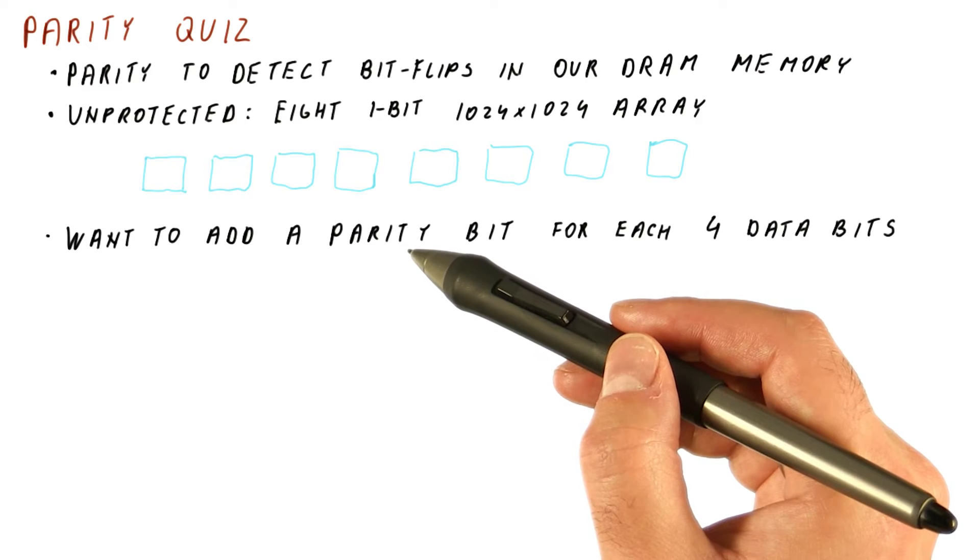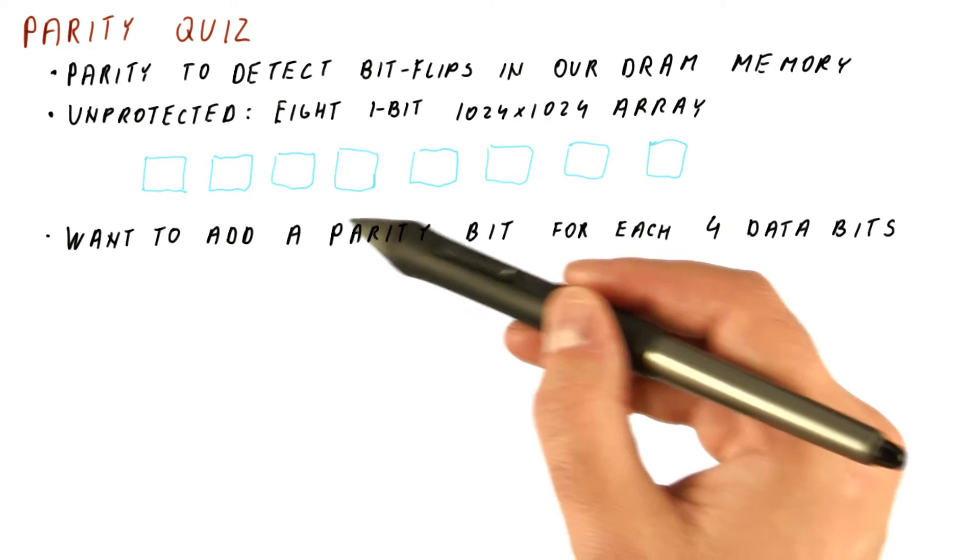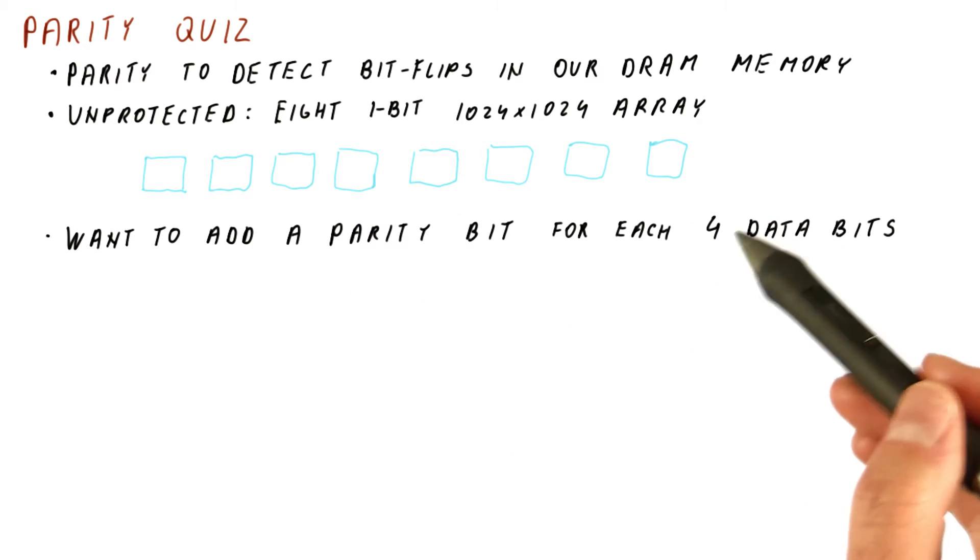We want to use parity to detect bit flips, and what we can afford is a parity bit for every group of four data bits.